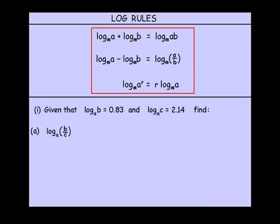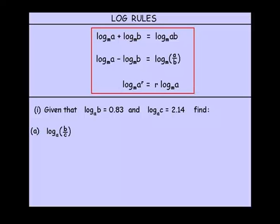We're given that log of B is equal to 0.83, and that log C is equal to 2.14. We're asked to find, firstly, log of B over C.